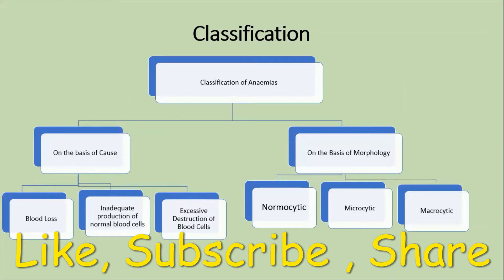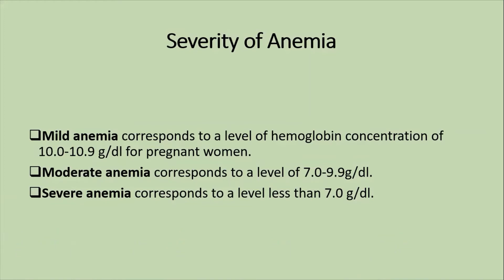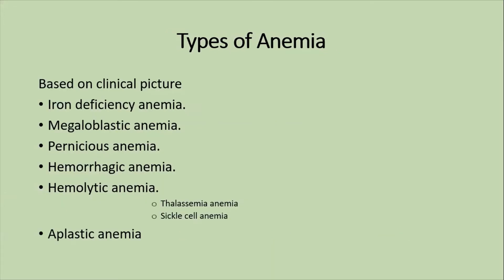On the basis of morphology, there is normocytic, microcytic, and macrocytic anemia. Regarding severity in pregnancy: mild anemia is 10 to 10.9 grams per deciliter, moderate anemia is 7 to 9.9 grams per deciliter, and severe anemia corresponds to less than 7 grams per deciliter hemoglobin.